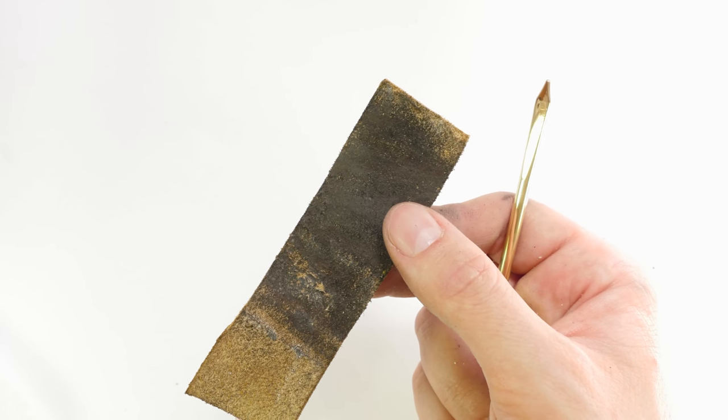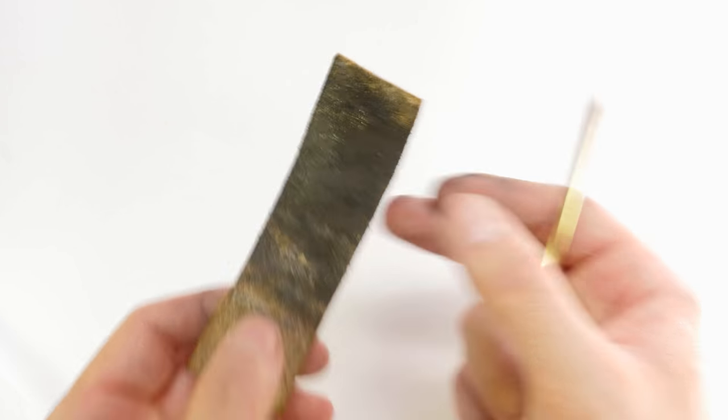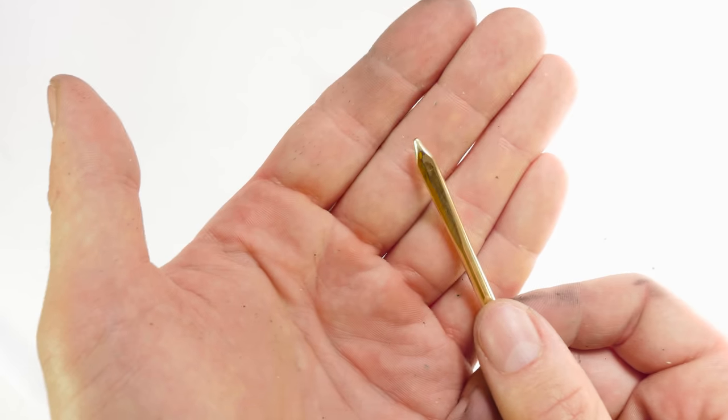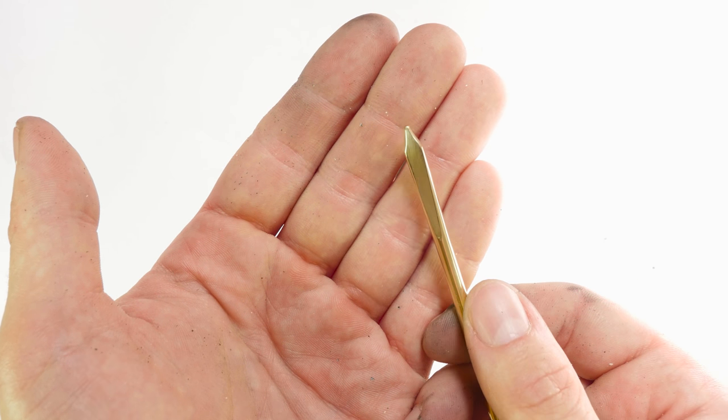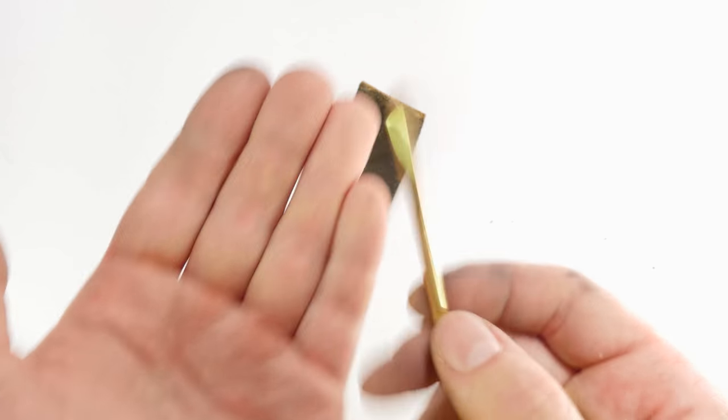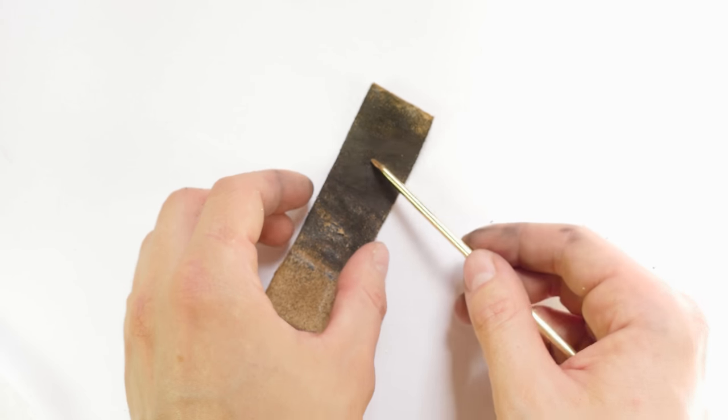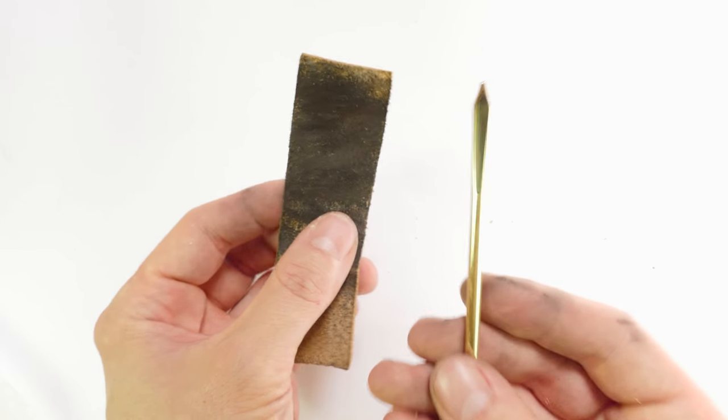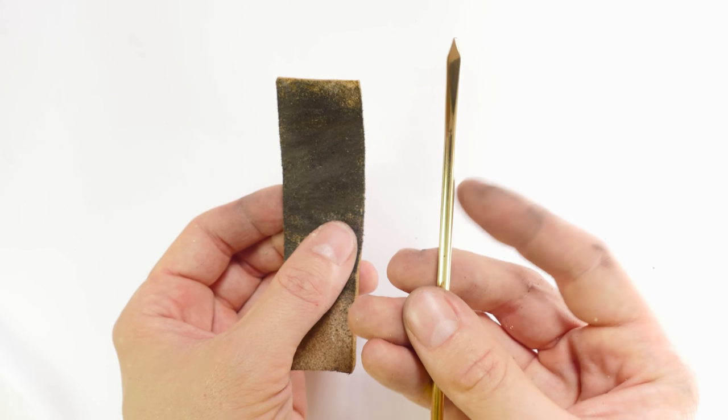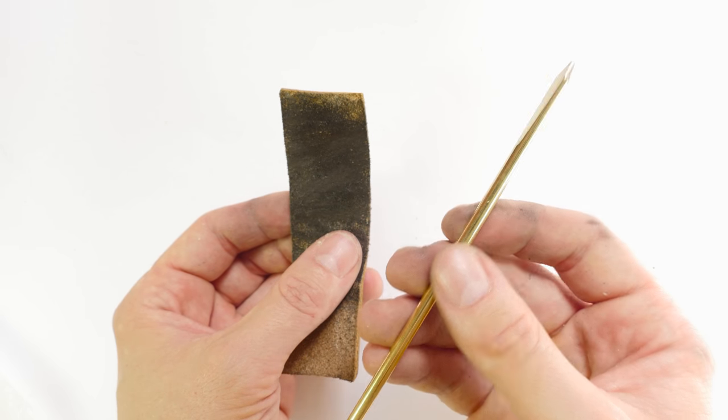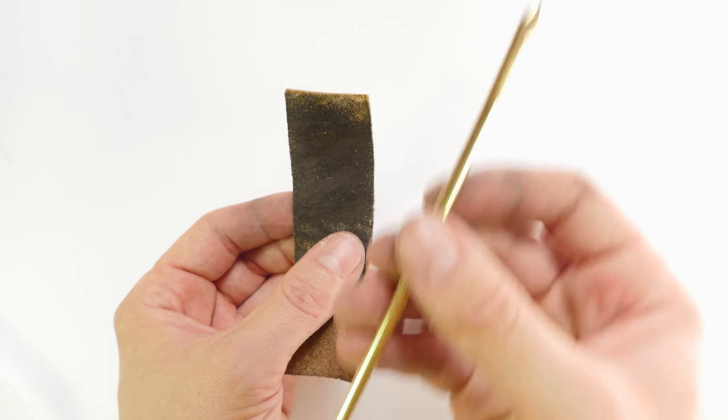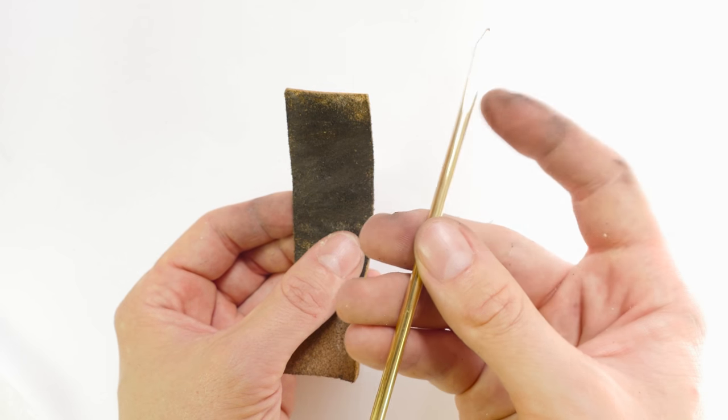So after polishing for around 10 minutes this is what I got. You can see that it has almost a mirror like shine. Now the longer that you polish using the compound the greater shine you're going to get on your lacing needle. So it is mostly a matter of your time investment. The more time you spend the greater the result will be.